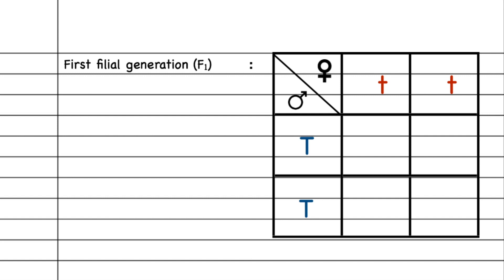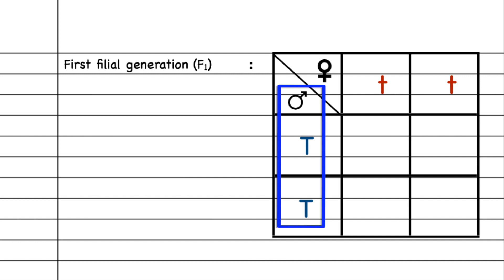To show the results, we will use a method called the Punnett square method to represent the combinations of gametes and how they will unite to form the offspring in F1 generation. In this Punnett square, on the horizontal row on the upper side we will see the gametes from the female dwarf plant, and on the left-hand column we will see gametes from the male tall plant.